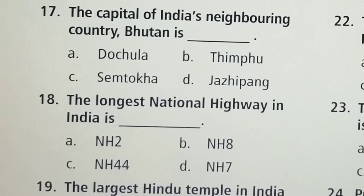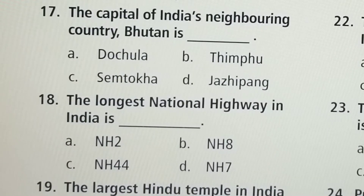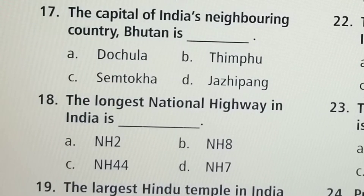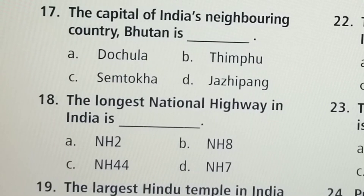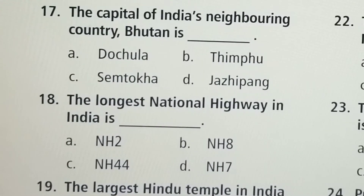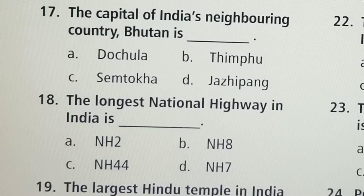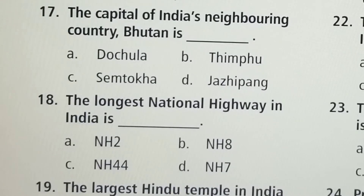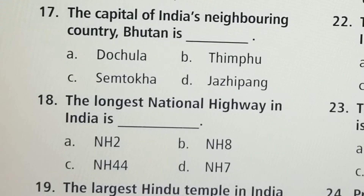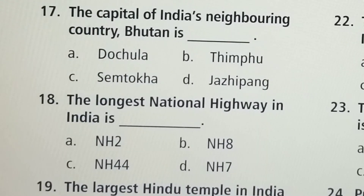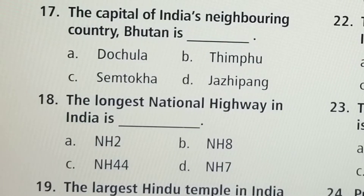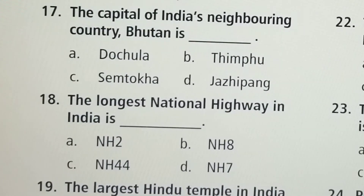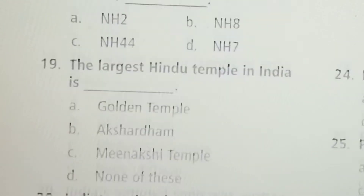Next question: The longest national highway in India is — Option A: NH2, Option B: NH8, Option C: NH44, Option D: NH7. Option C, NH44, is the correct answer.